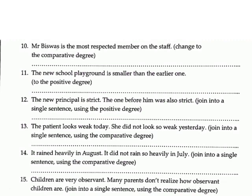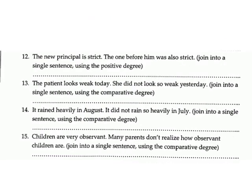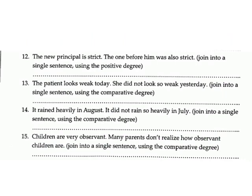11. 'The new school playground is smaller than the earlier one' — change to positive degree. Answer: The new school playground is very small. 12. 'The new principal is strict. The one before him was also strict' — join into a single sentence using the positive degree. Answer: The new principal is as strict as the previous one.